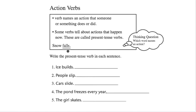Snow falls. We are going to try to identify or find the verb in this example sentence. To figure out which word is a verb, I use my thinking question: which word names an action? The word falls names an action. The word falls tells about an action that is happening now. So the word falls is a verb in the present tense.